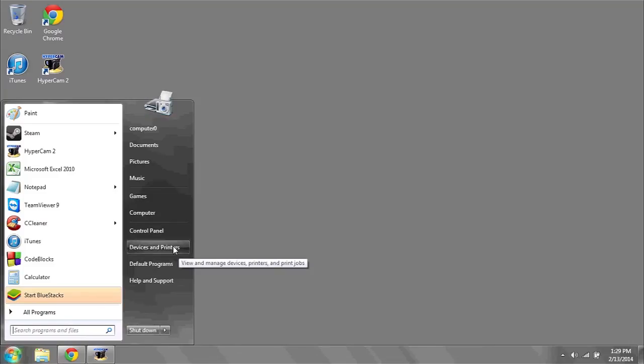To do this, go to the start bar in the bottom left corner. Click on devices and printers and then select the printer that has the driver that you want to remove.